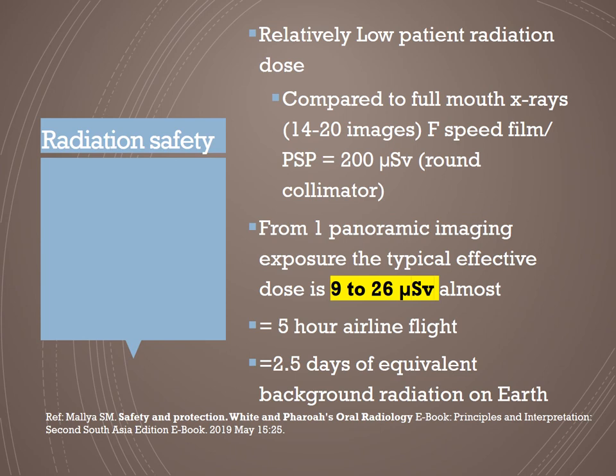Regarding radiation safety, a full mouth series of 14 to 20 films — even using F-speed film or PSP with a round collimator — is around 200 microsieverts, compared to just 9 to 26 microsieverts for one panoramic image. This effective dose is almost equal to a 5-hour airline flight or 2.5 days of equivalent background radiation on Earth. The range exists because it depends on machine to machine and the area of exposure.